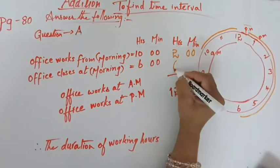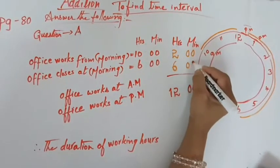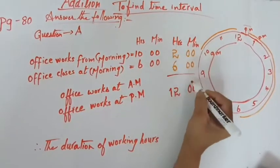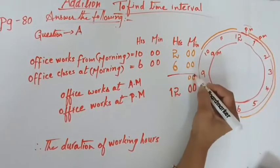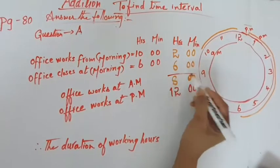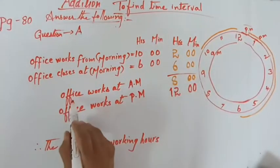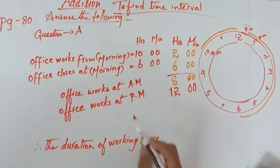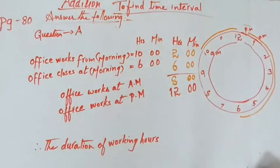So we have to add here 6, minute is 0, so we have to add here minute means 0. And then here 2 plus 6 is 8. So it is office works at a.m., only a.m. is how many hours? 8 hours. And then the p.m. is 12 hours.